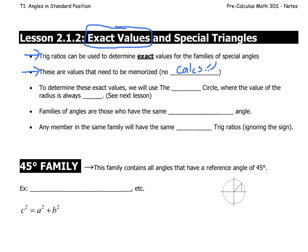To determine these exact values, we will use what's called the unit circle, where the value of the radius is always 1. This is going to be something you'll see in the next lesson. Families of angles are those angles that have the same reference angle, so they are also called related angles, hence families.